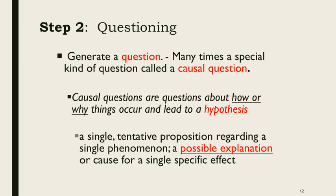Causal questions are any questions that lead to explanations. They tend to ask how things work or why things occur, and if you answer a causal question you're giving a hypothesis. A hypothesis is a possible explanation — a single statement that is specific but tentative. You may not be sure it's correct, and it addresses a single specific phenomenon. Hypotheses are very narrow but are answers to causal questions.